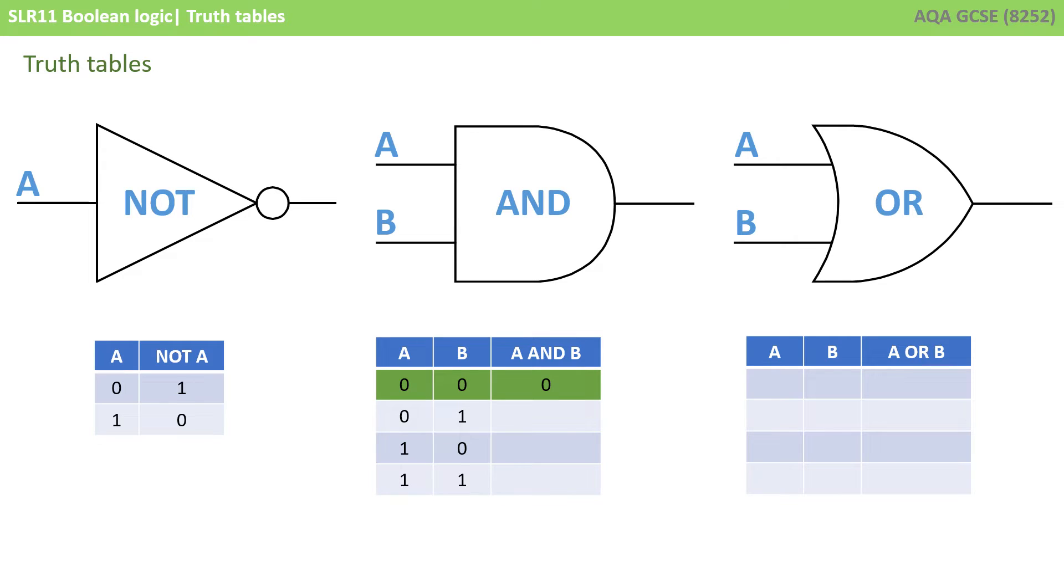So if you remember, with an AND gate both the inputs, A and B, need to be 1 for the output to be 1. So in this row the output would be 0. In this row the output would be 0. In this row the output would be 0. But in the final situation where both A and B are 1, the output would be 1.